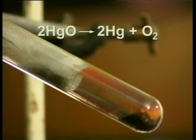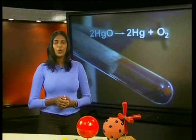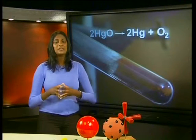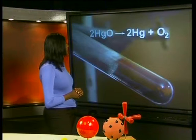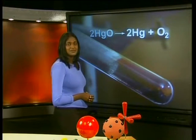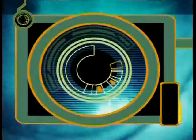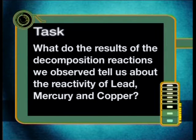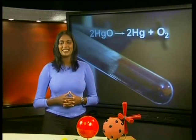That's all for now. Wasn't that a fantastic experiment? Remember, this experiment should always be done in a controlled environment by an experienced chemist, like John. Let's take one more look at the balanced chemical equation for this reaction: two mercury oxide decomposes into two mercury atoms and oxygen. I would like you to think about this: what do the results of the decomposition reactions we observed tell us about the reactivity of lead, mercury, and copper? We will discuss the answer to this task in our next lesson. See you then.